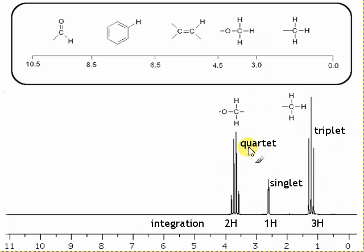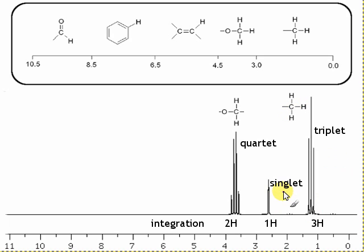There's a quartet and there's a triplet. That shows that the OCH2 group and CH3 groups are next to each other. The CH2 group is split into a quartet by the neighbouring CH3 group, and the CH3 group is split into a triplet by the neighbouring CH2 group, and the singlet doesn't couple.